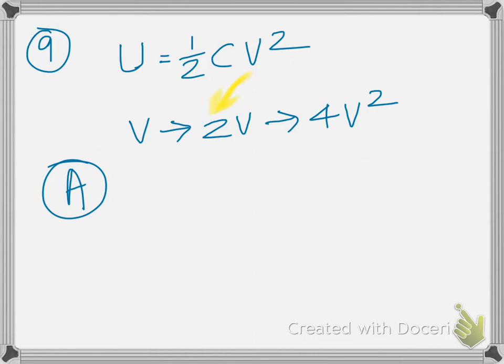Number 9, doubling the voltage across a given capacitor. You see, the capacitance doesn't change, it's a constant. And therefore, if the voltage is doubled, when you take the square of that whole quantity, you're going to get 4 times V squared. Therefore, the potential energy becomes 4 times, which means it's quadruples.